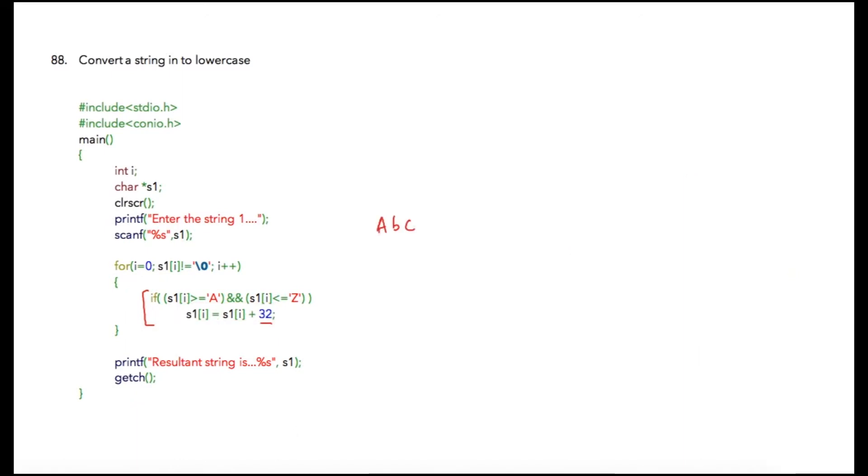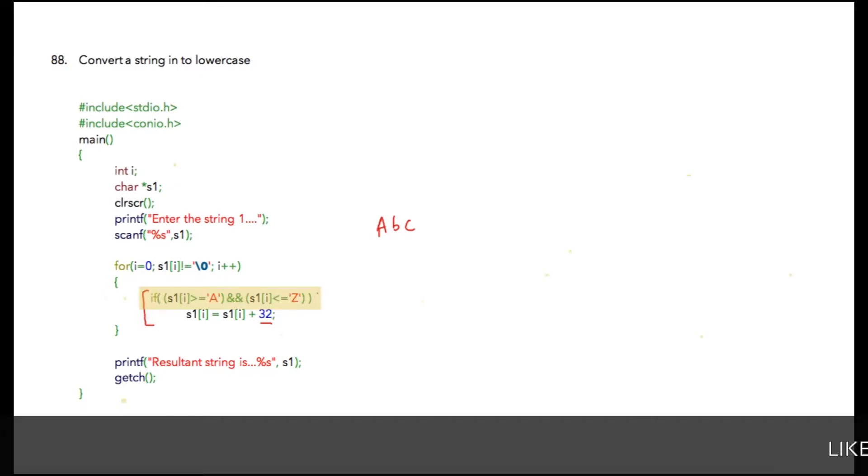If our string is entered as capital ABC, here A is capital, then the condition will be true in the first case where we have found occurrence of a capital letter. Then we are going to add plus 32 into it. So ASCII value of capital A is 65. When we add it with 32, we get 97, so capital A is converted to small a.